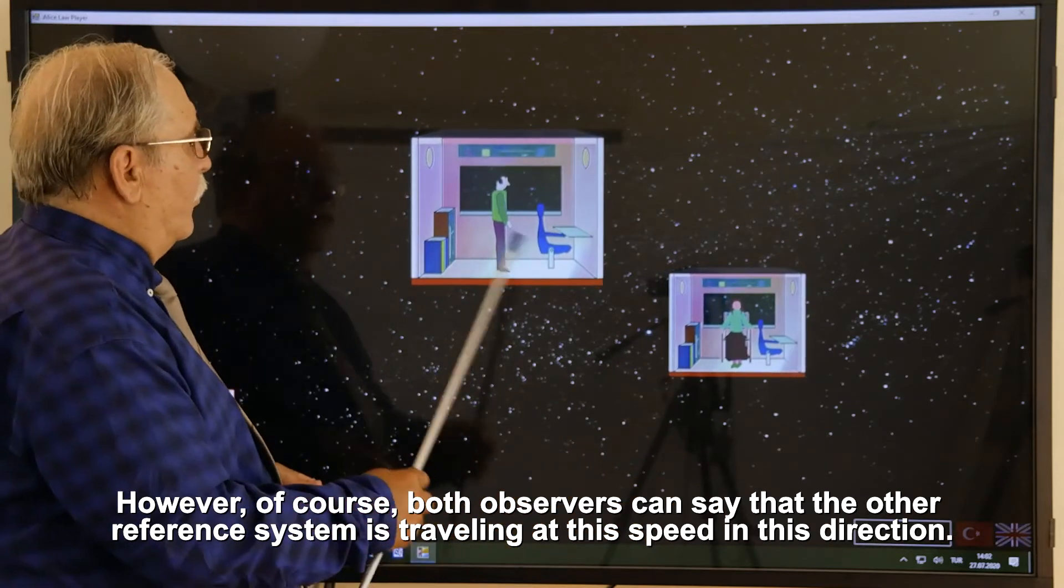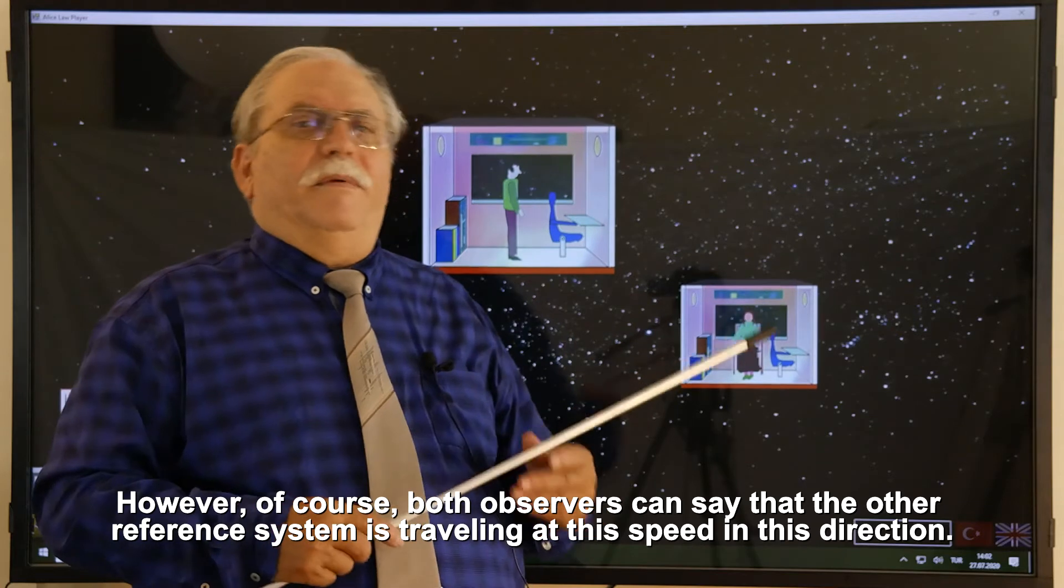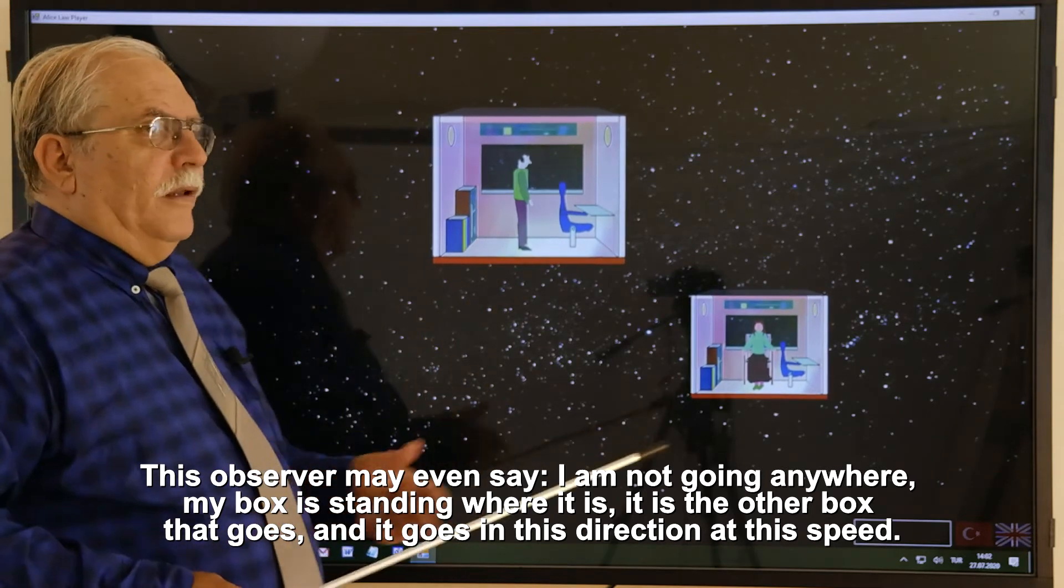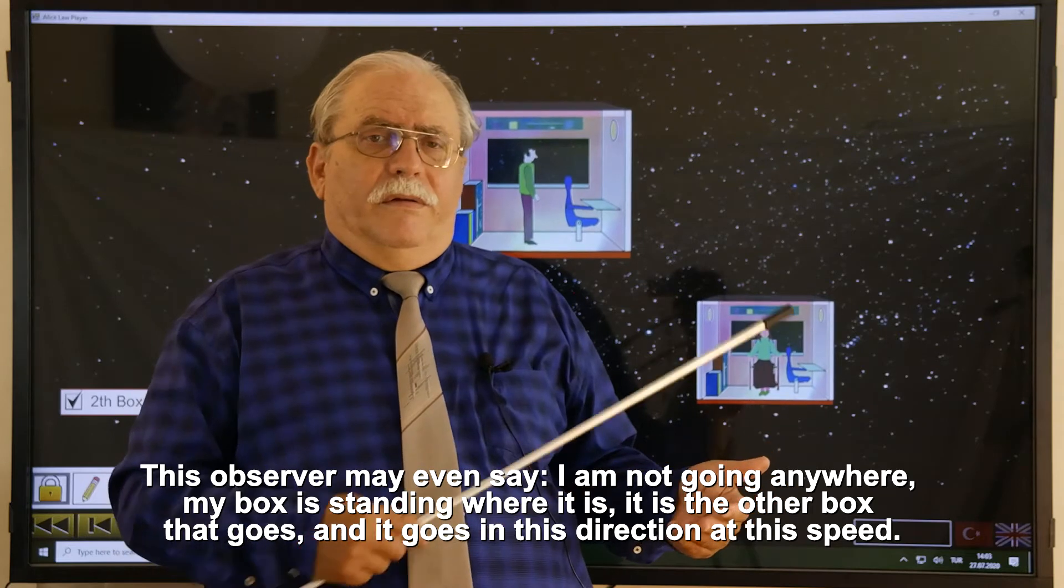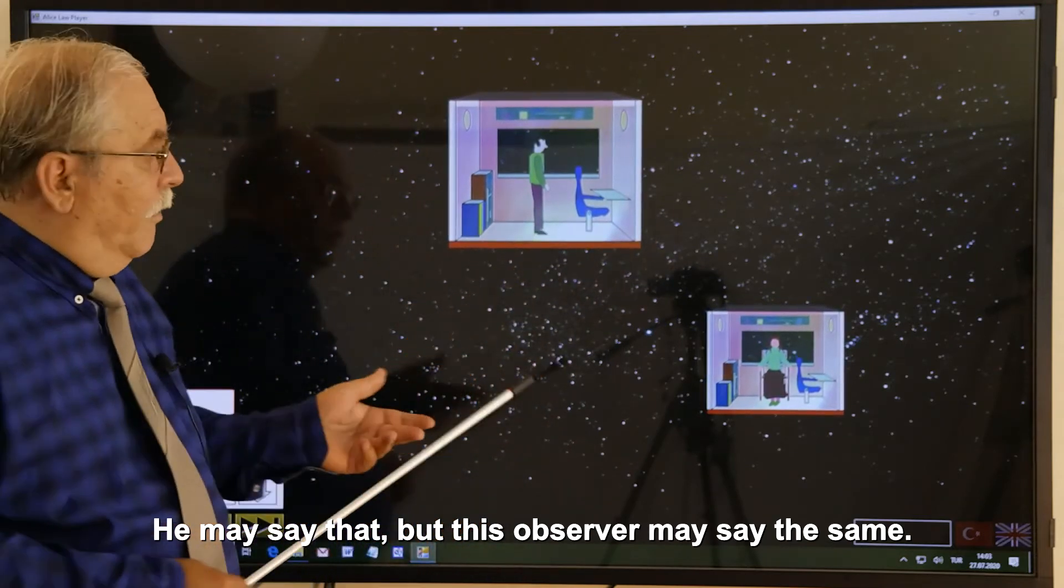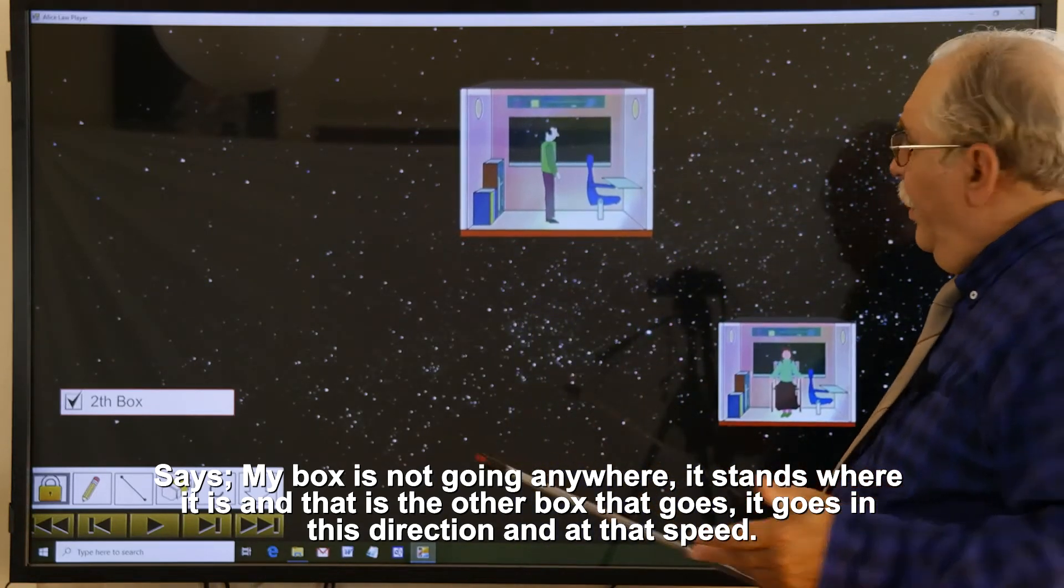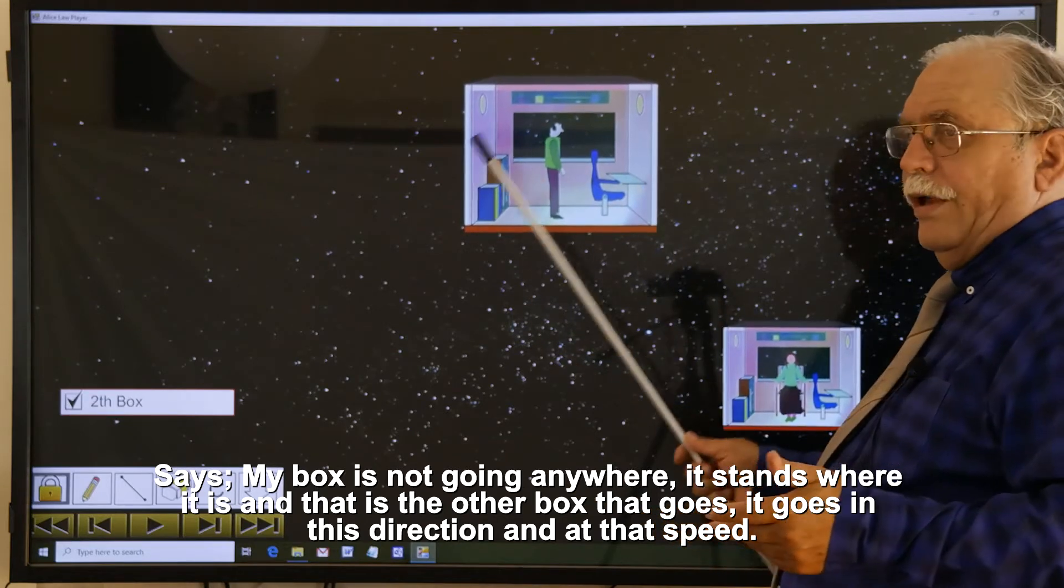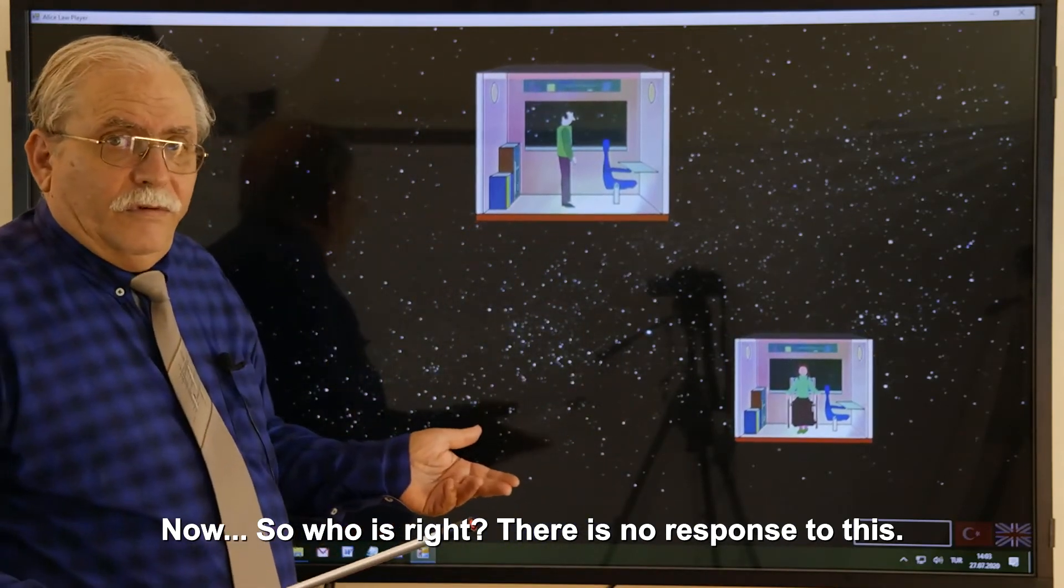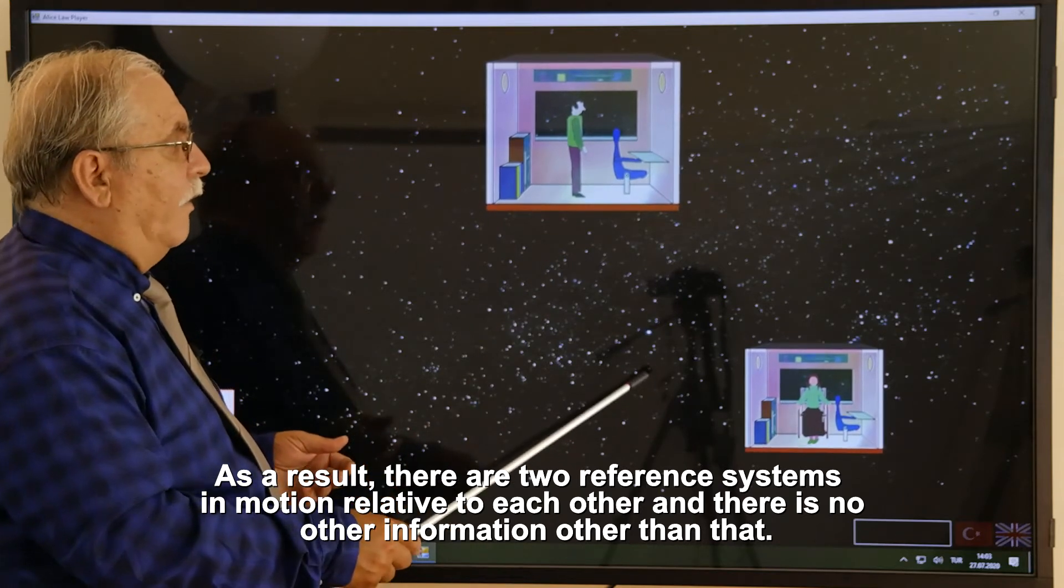Let's put another box here, like this. There is also an observer here. Now, this observer does not know in which direction and at what speed he is going. He does not have such information. However, of course, both observers can say that the other reference system is traveling at this speed in this direction. This observer may even say, I am not going anywhere, my box is standing where it is, it is the other box that goes, and it goes in this direction at this speed. But this observer may say the same. My box is not going anywhere, it stands where it is, and it is the other box that goes, it goes in this direction and at that speed. Now, so who is right? There is no response to this. As a result, there are two reference systems in motion relative to each other, and there is no other information other than that.